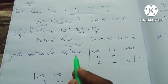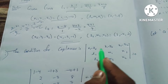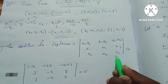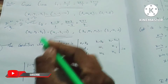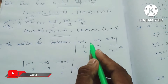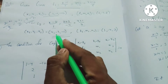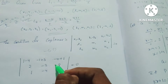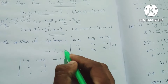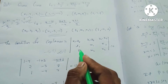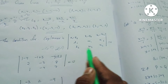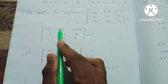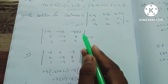Let's check the condition for coplanarity using the determinant formula with rows (x1−x2, y1−y2, z1−z2), (l1, m1, n1), (l2, m2, n2). Substituting: x1−x2 = 1−4 = −3, y1−y2 = −1+3 = 2, z1−z2 = −10+1 = −9. Direction ratios of line 1: l1 = 2, m1 = −3, n1 = 8. Direction ratios of line 2: l2 = 1, m2 = −4, n2 = 7.